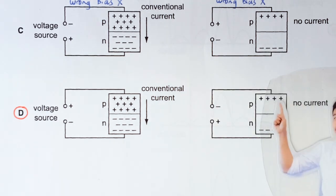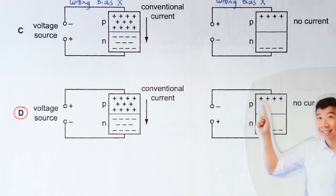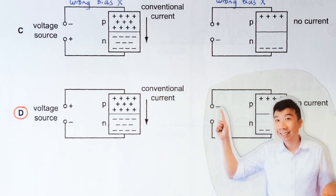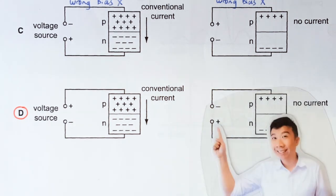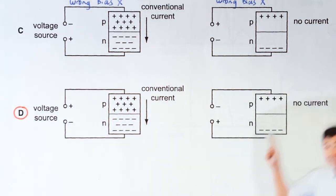This diagram here shows a p-n junction in reverse bias because the P side is connected to the negative terminal, the N side is connected to the positive terminal, and the absence of the holes and the absence of electrons here convey that there's this depletion region.